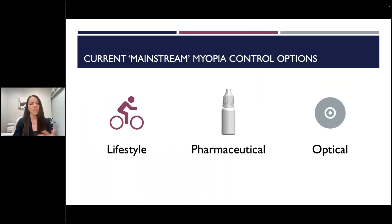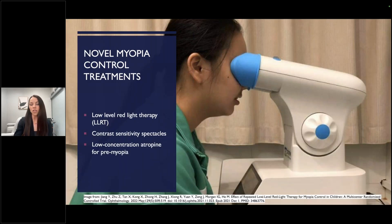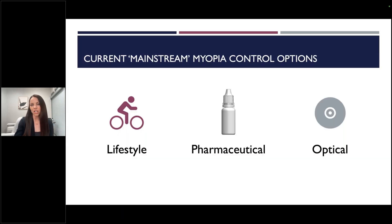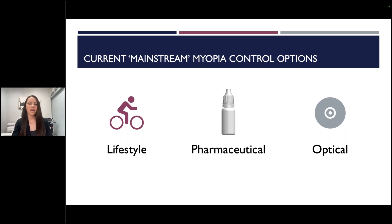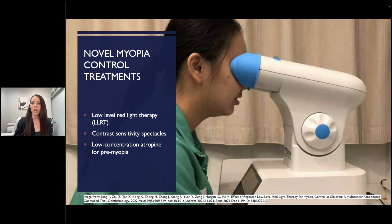Mainstream options — lifestyle, pharmaceutical, and optical — are all out there. Some of the more novel myopia control treatments include low-level red light therapies, and contrast sensitivity spectacles are a little bit newer. Optical here in Canada includes spectacle options as well. In the States, these are coming hot off the press hopefully very soon. We've had spectacle options for myopia control that are wonderful adjuncts with our other therapies here for many years. We're going to focus more on axial length and how that has been part of my clinic, but there's a lot of things we could talk about related to these treatments at the end. Low concentration atropine for pre-myopia would be considered more of a novel therapy, and we'll talk about how axial length ties into making decisions on whether to treat pre-myopia at all.